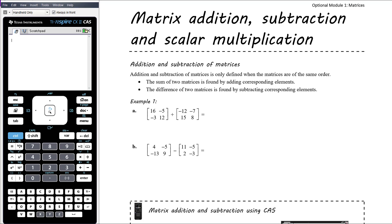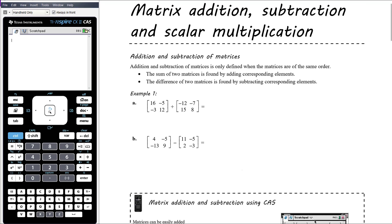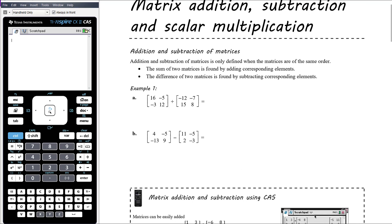In today's video, we want to start looking at actually manipulating matrices. We're going to be looking at matrix addition, subtraction, and scalar multiplication. Scalar multiplication simply means multiplication by a number — not multiplication by a matrix, so not a matrix times a matrix, but a number times a matrix. We'll get to that in a minute. Let's start with addition and subtraction.